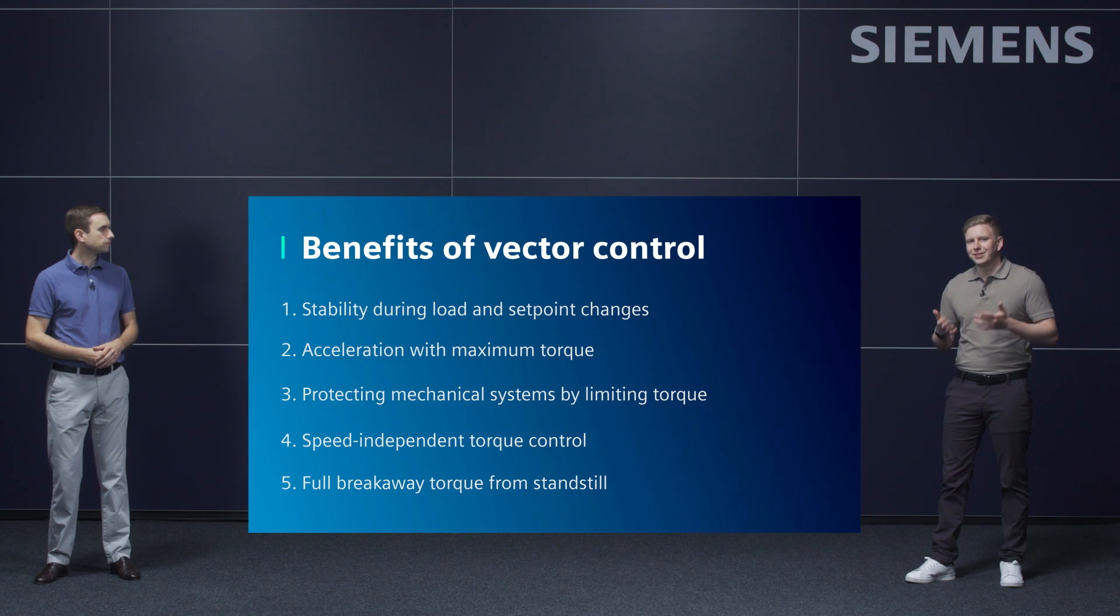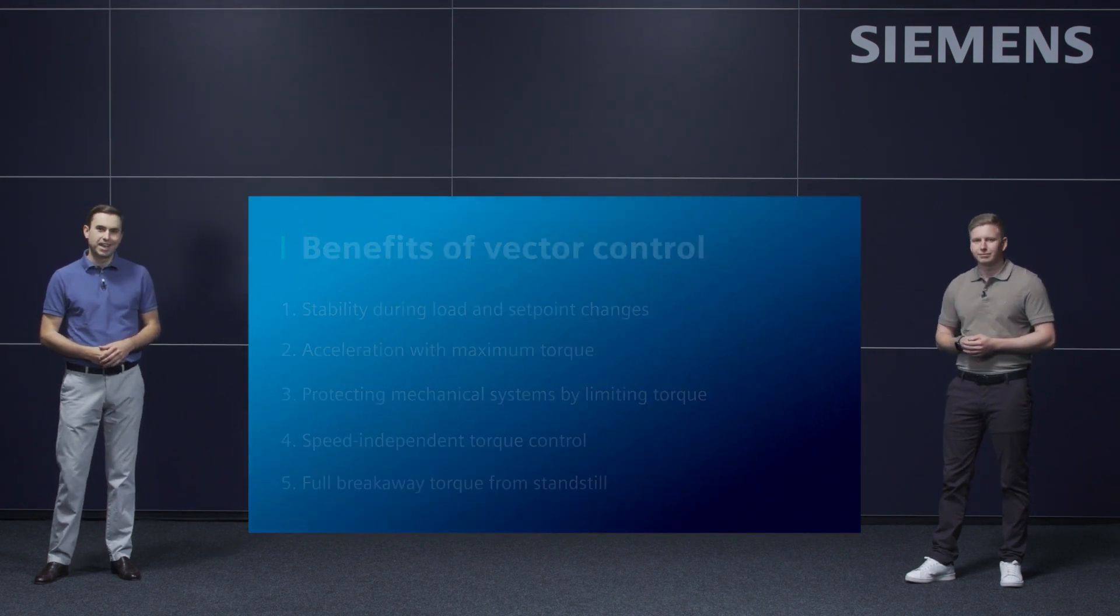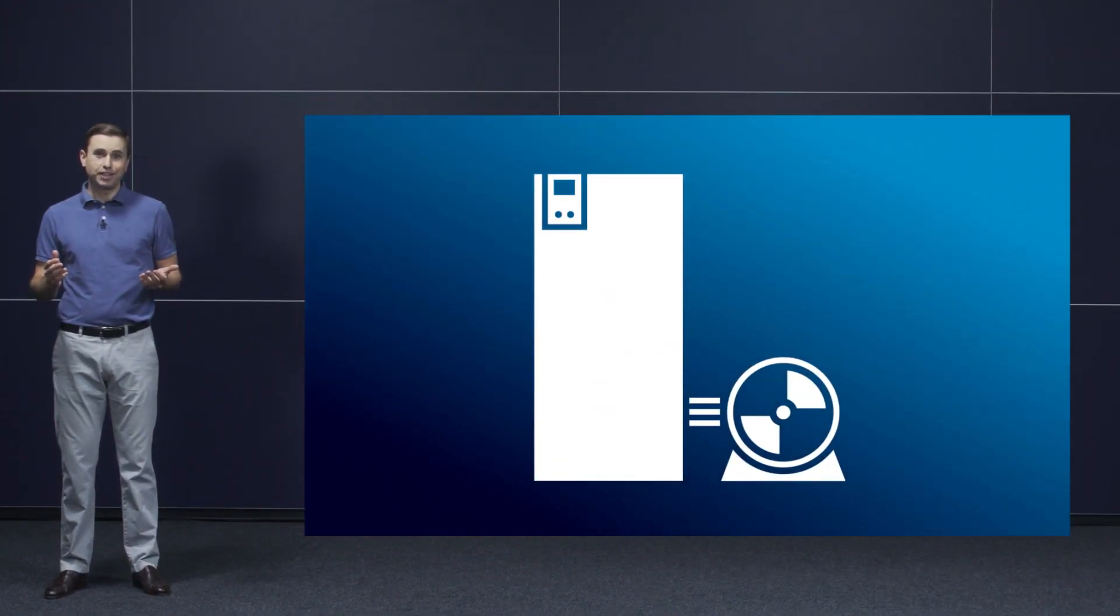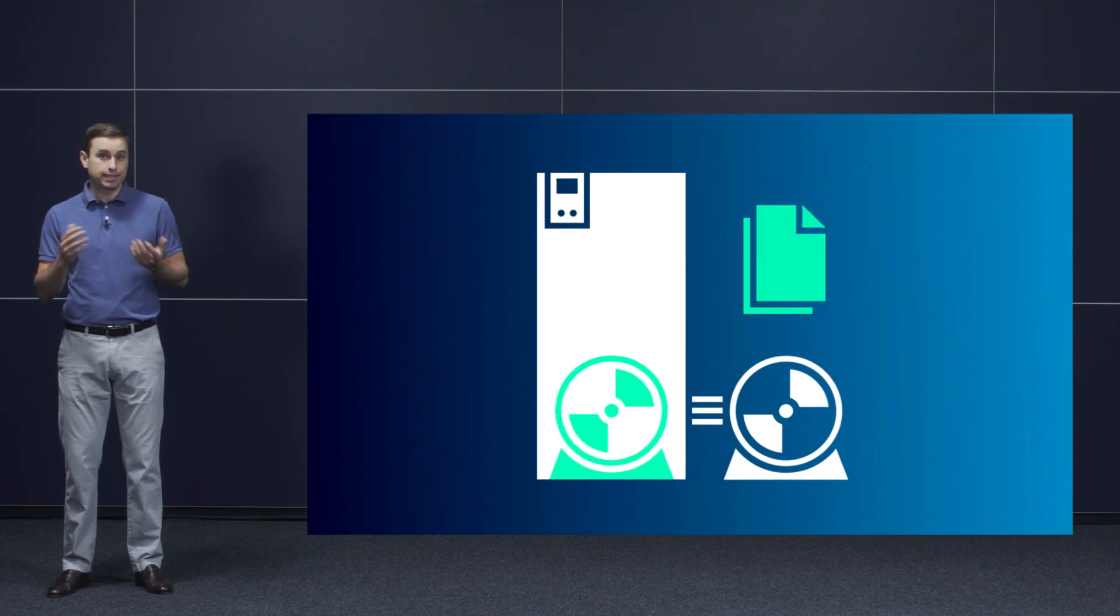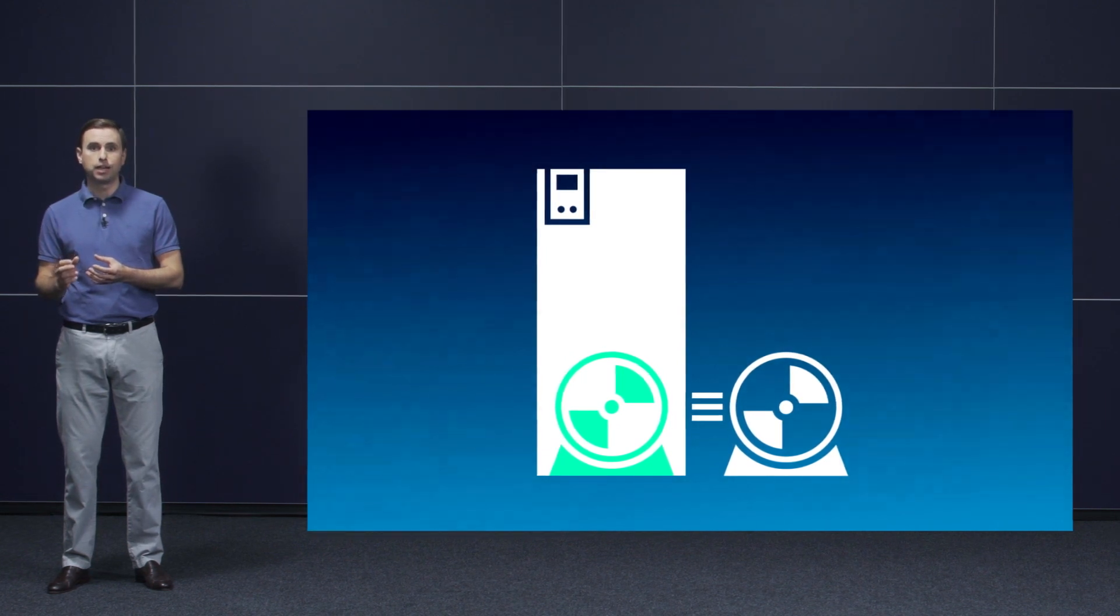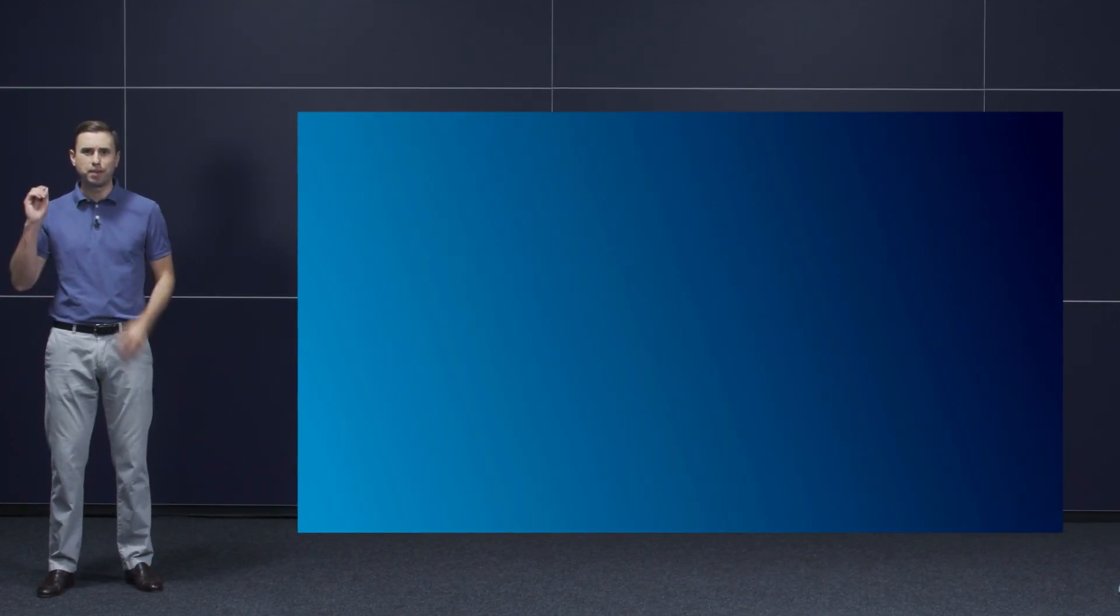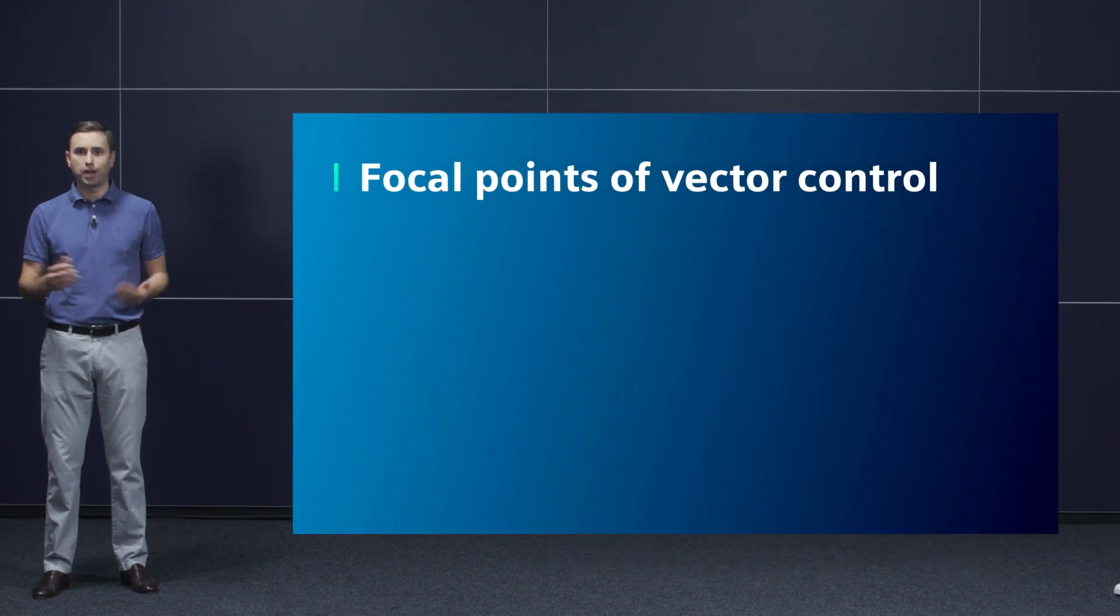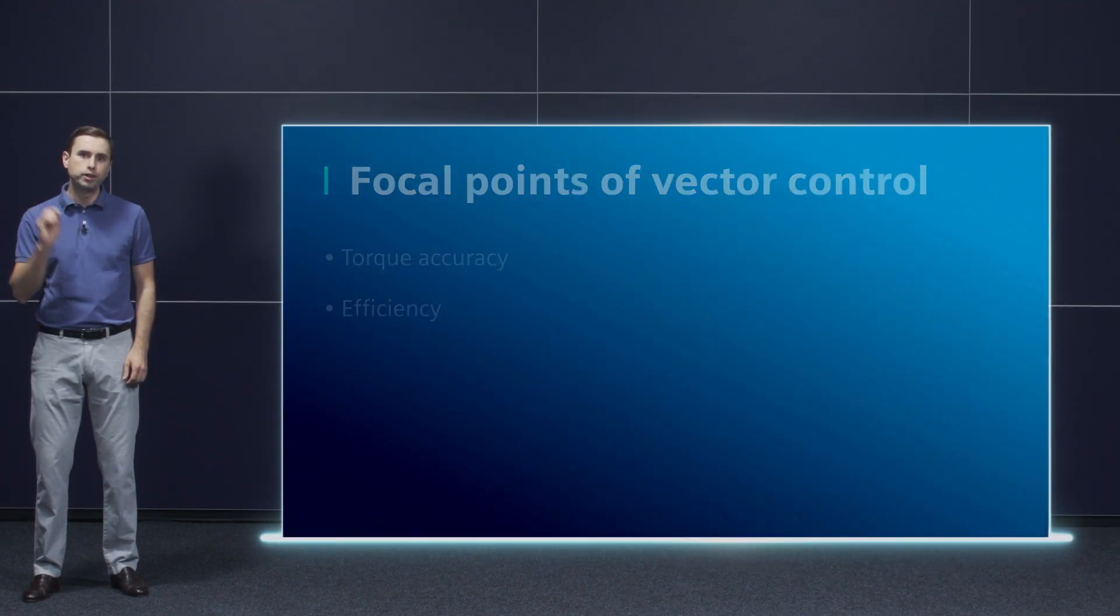Christian, what's the secret behind vector control that makes these benefits possible? Vector control uses a very precise motor model. This means the behavior of the motor is very well known, reducing the workload for the actual controller. This results in the best possible dynamic response. The main focus of vector control is on torque precision and efficiency. It also delivers excellent results without encoders.